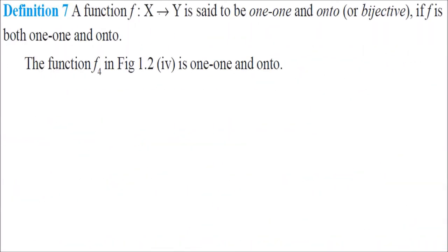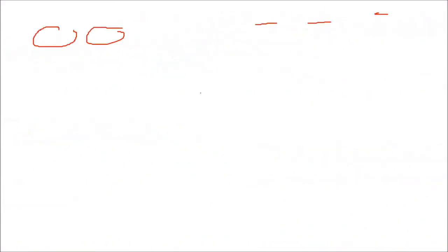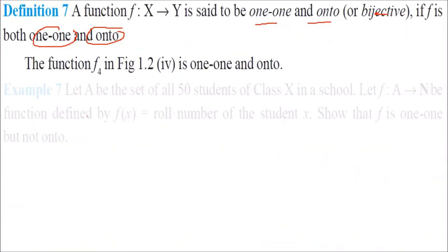A function f from x to y is said to be bijective if it is both one-to-one and onto. Looking at our diagram, f4 is one-to-one and onto — it is bijective.